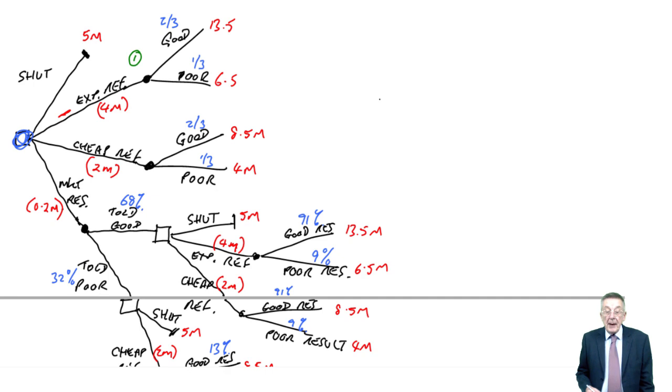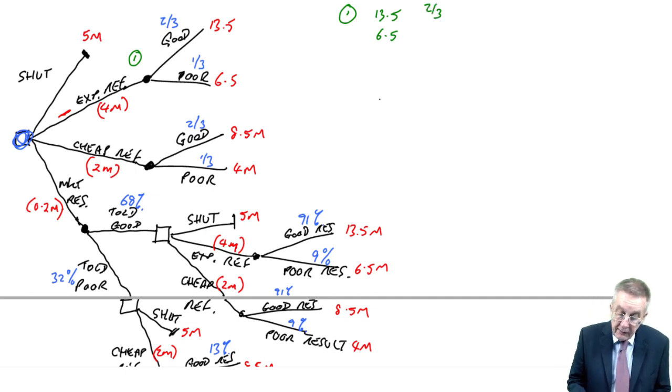So, at point one, remember at point one, we've paid out four million. But what will we get? I'll show my workings. We'll either get 13.5 million or we'll get 6.5 million. We know the probabilities as a two thirds probability of getting 13 and a half, a third probability of getting six and a half.